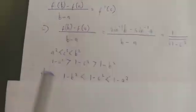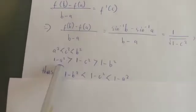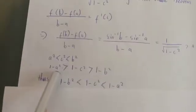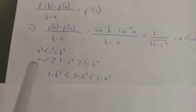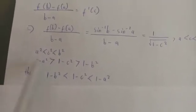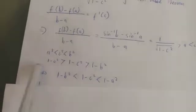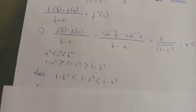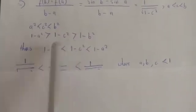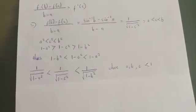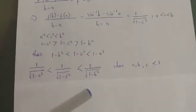This implies that 1−a² > 1−c² > 1−b², since a is the smallest of the three values. Subtracting a smaller number from 1 gives a larger result. So we have 1−a² > 1−c² > 1−b².